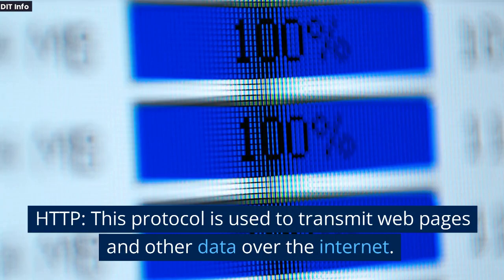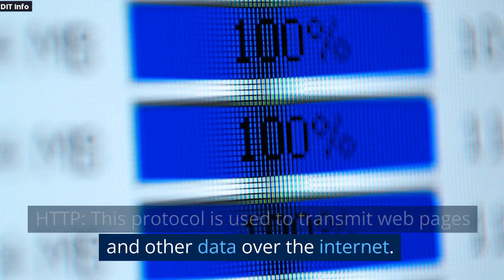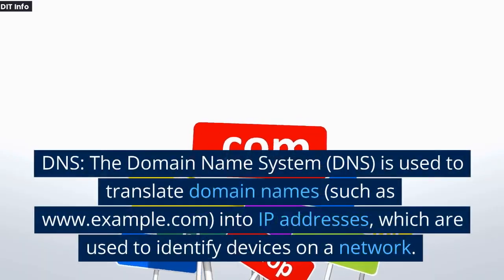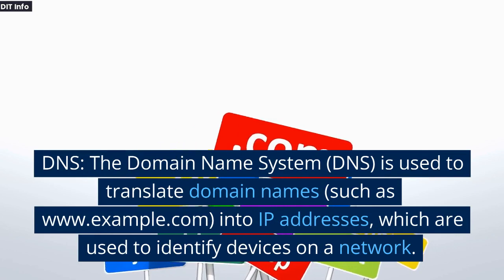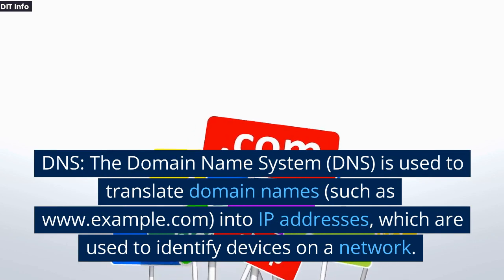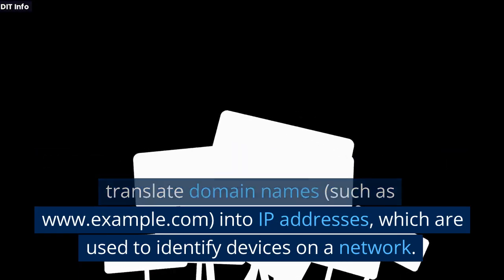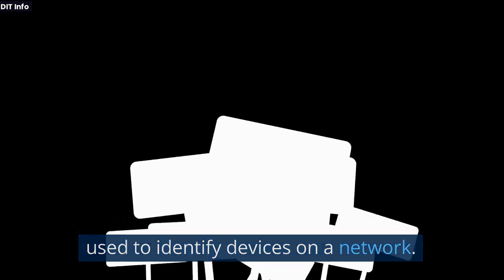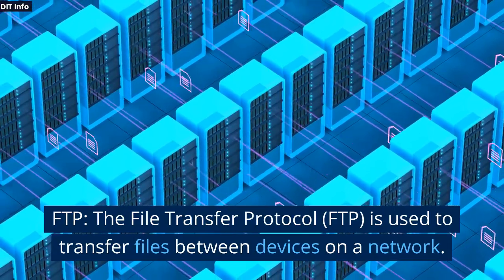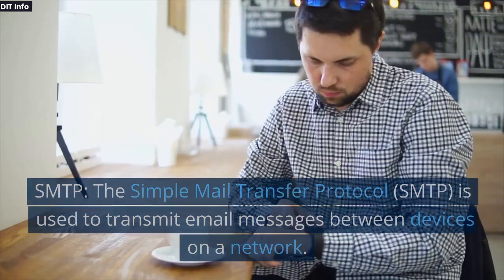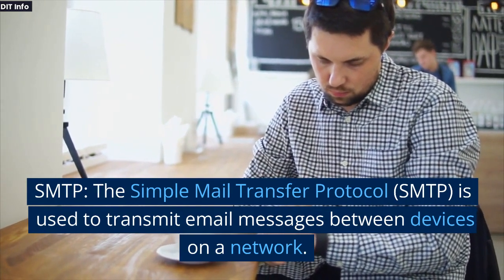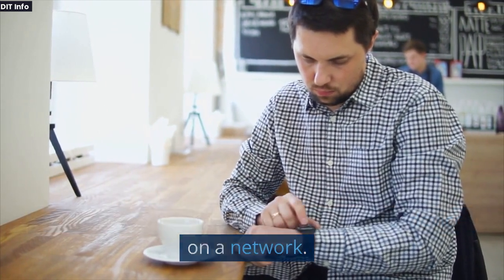HTTP: this protocol is used to transmit web pages and other data over the internet. It is used by web browsers to communicate with web servers. DNS: the Domain Name System is used to translate domain names, such as www.example.com, into IP addresses, which are used to identify devices on a network. FTP: the File Transfer Protocol is used to transfer files between devices on a network. SMTP: the Simple Mail Transfer Protocol is used to transmit email messages between devices on a network.